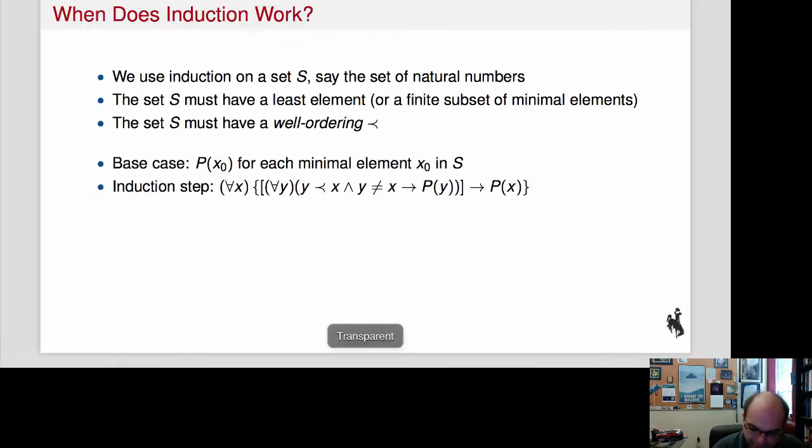So here's what we have in slightly more mathematical terms. We're doing induction on some kind of a set S. S could be like the naturals. But we're going to see that we can do induction over larger sets, like the set of all lists or the set of binary trees or many interesting sets. The set has to have a least element, or a finite subset of minimal or least elements. For example, for the natural numbers, that's 0.